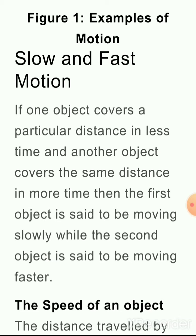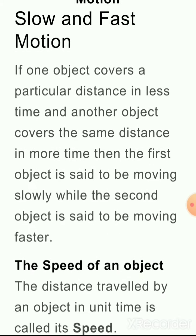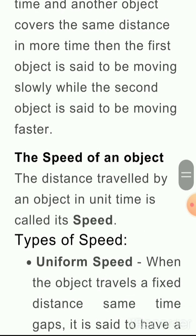Suppose आपको 5 km जाना है। एक person car से जाता है, एक person cycle से जाता है। Car से जाने वाला person 5 km की distance 15 minutes में complete करेगा, और cycle से जाने वाला person 5 km को 45 minutes में complete करेगा। तो हम कह सकते हैं कि car से travel करने वाला person faster travel करता है in comparison to cycle। इससे हम slow and fast motion समझ सकते हैं।